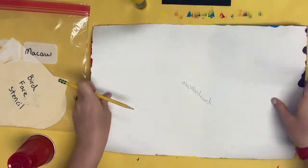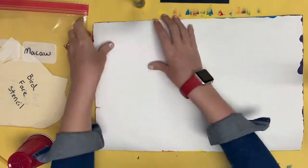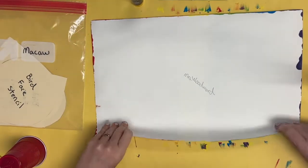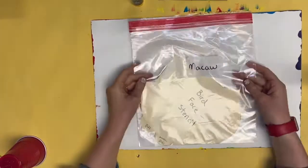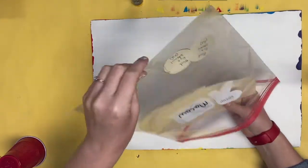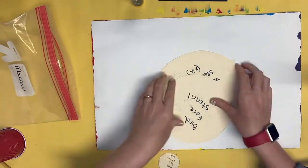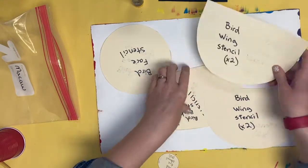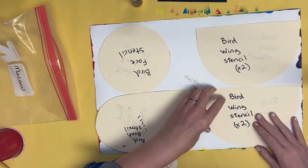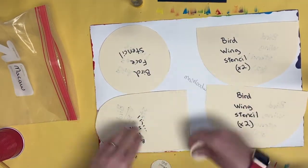For today's art activity, I'm going to start by taking all of my stencils that I have for the different parts of my macaw bird and I am going to place them onto my piece of paper that I have painted. I want to spread them around so that I know that they all fit.